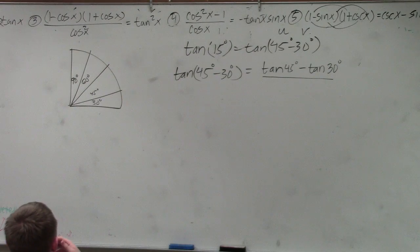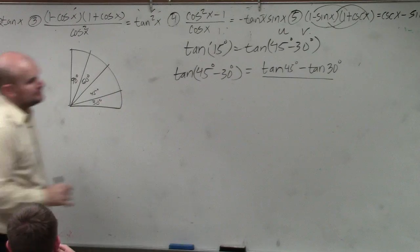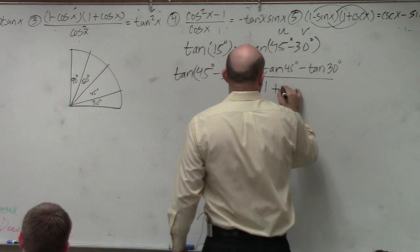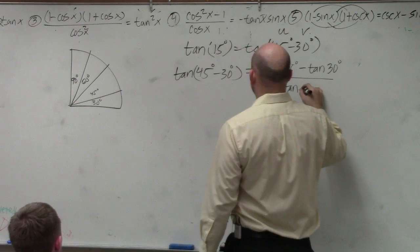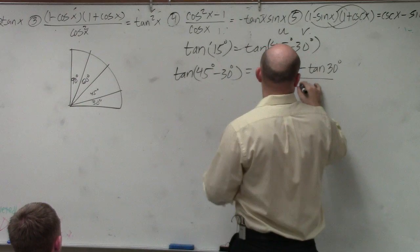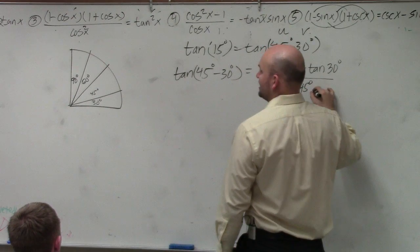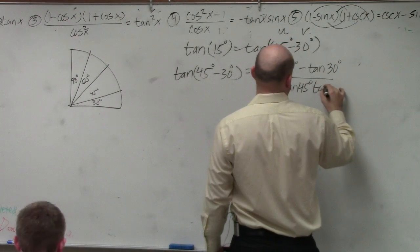What's the bottom sign here? Plus. So you use plus over there. Then it's 1 plus tangent of u, which is 45 degrees, times tangent of v, which is 30 degrees.